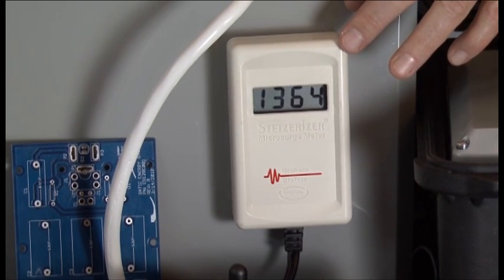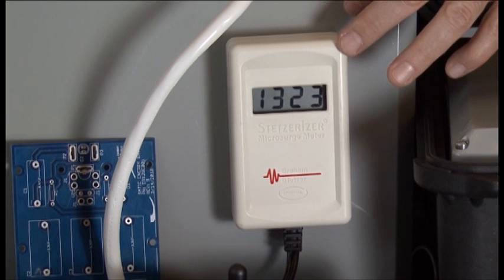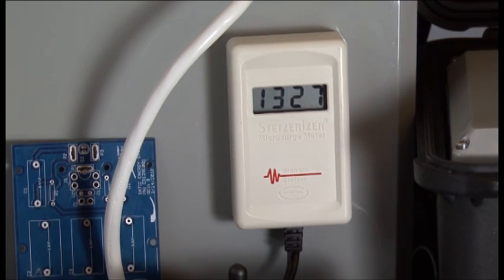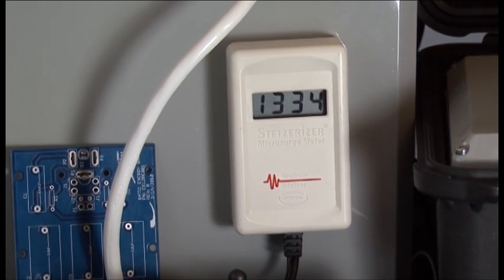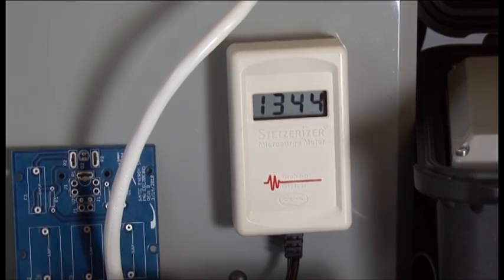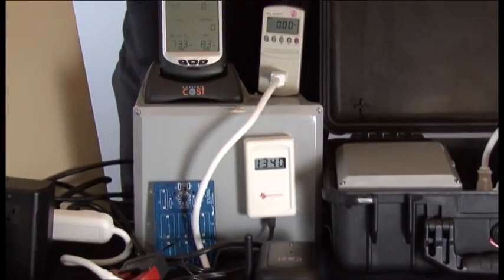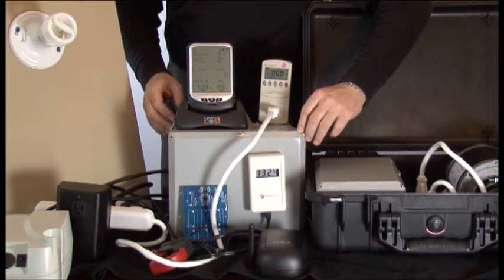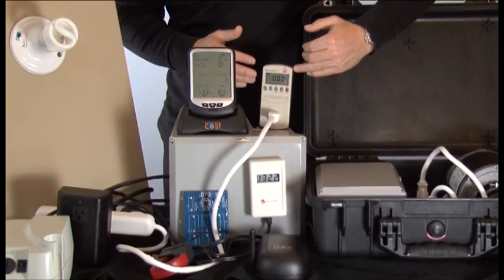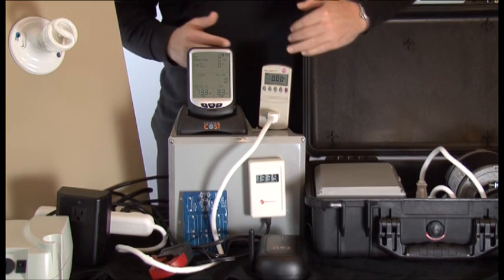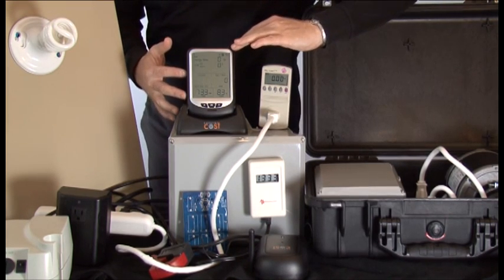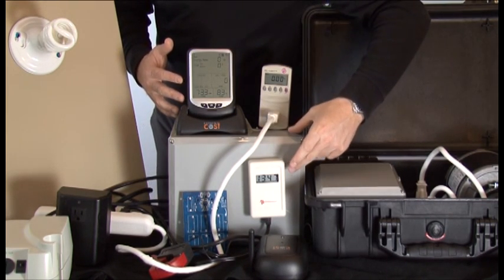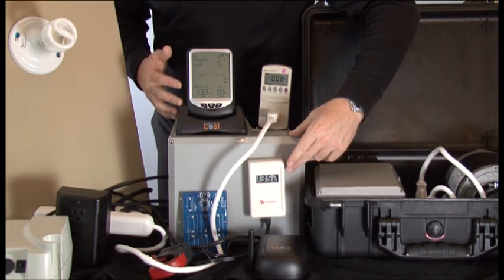We also very commonly use a Fluke meter for amps, like the P3, but the P3 also shows power factor, and we don't want to overdo it. For this demonstration right now, we're going to use the P3 for amps and power factor. We're going to use the Envy for watts, and we're going to use the Graham Stetzer for EMFs.